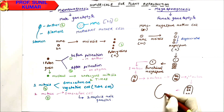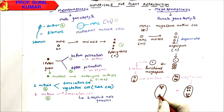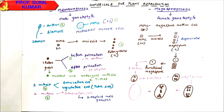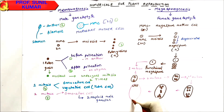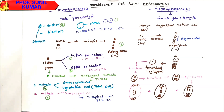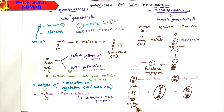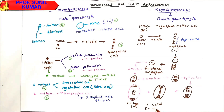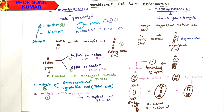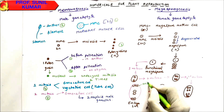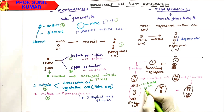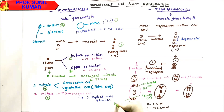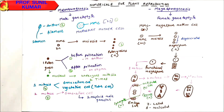One cell from each pole comes to the center — only the cytoplasm fuses, not the nucleus. The three cells at each pole are called antipodal cells. The structure formed is the embryo sac, which is a seven-celled and eight-nucleated structure. The cells at the chalazal end are antipodal cells (haploid). The cell in the center is the egg cell (haploid), surrounded by synergids (also haploid).